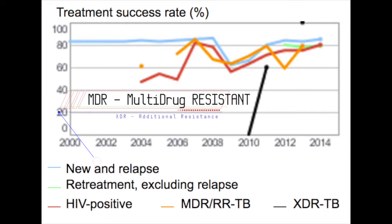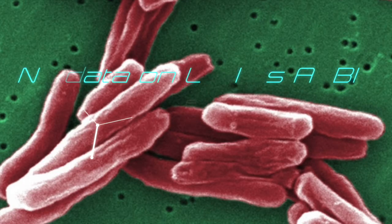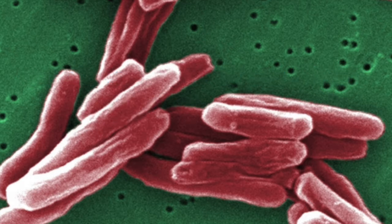This is another trending line where the black line represents XDR tuberculosis, and the orange line represents multiply drug-resistant tuberculosis. XDR cases are those resistant to the two most potent drugs — INH (isoniazid) and rifampin — and are also resistant to second-line drugs.